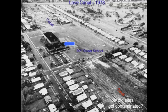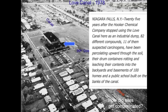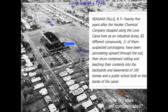The property was sold to the city for a dollar. The city had plans to develop a subdivision there, and as you see in this picture, the subdivision had about 100 homes and a school, with the school located right on the banks of the buried canal. In 1978, a newspaper article read: '25 years after the Hooker Chemical Company stopped using the Love Canal as an industrial dump, 82 different compounds — 11 of them suspected carcinogens — have been percolating upward through the soil. There are drum containers rotting and leaching their contents into the backyards and basements of 100 homes and a public school built on the banks of the canal.'